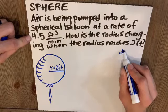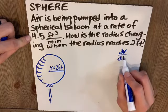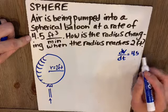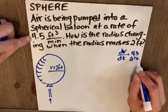They've given us the volume is changing per time. dV/dt is 4.5 and that's feet cubed per minute.